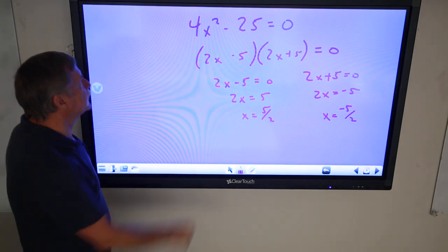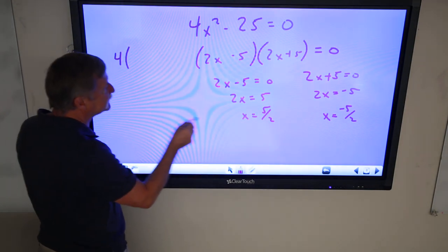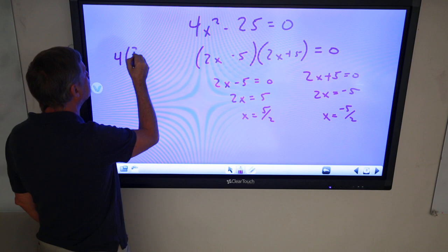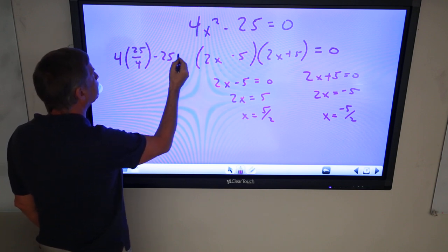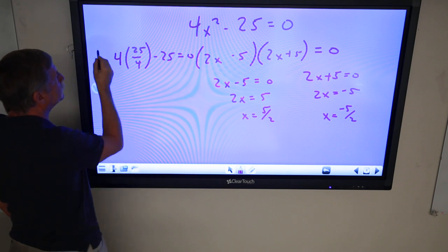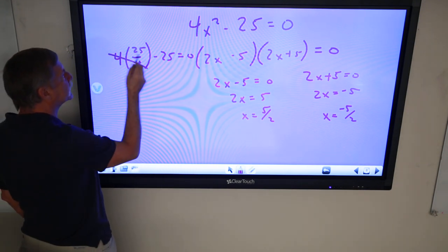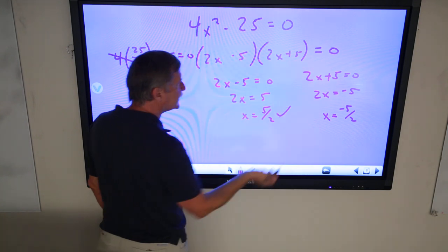And if we go up here, we would see 4 times 5/2 squared, 25 over 4, minus 25, which will equal 0. Now 4 over 4 cancels out, 25 minus 25 equals 0, that works out.